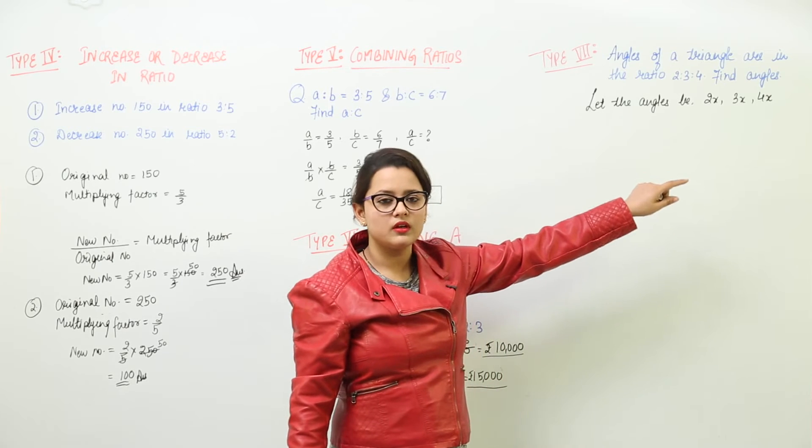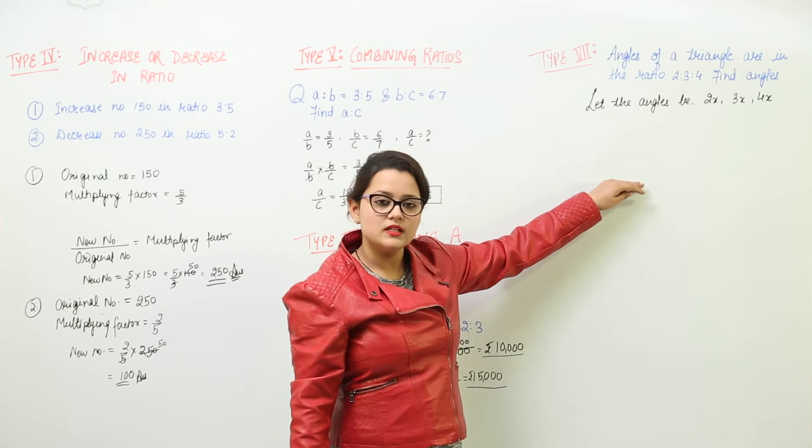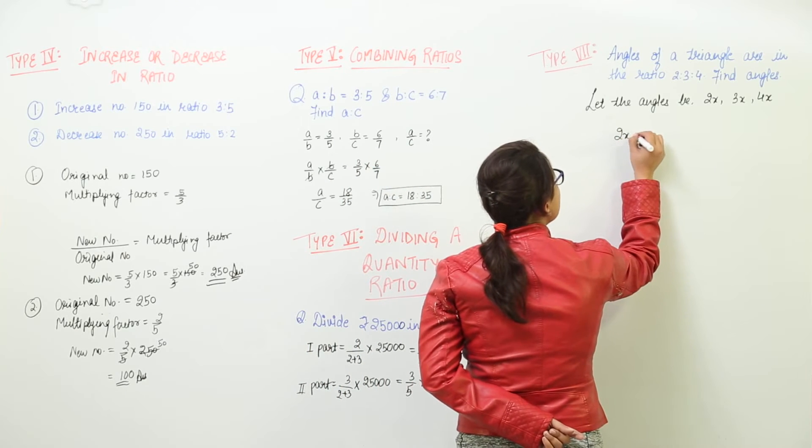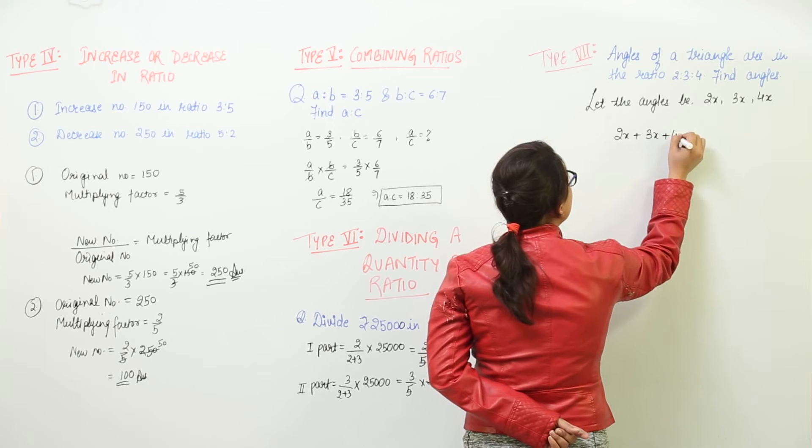Now that we have written these quantities, all we have to do is apply the angle sum property, because the sum of all three angles of a triangle is equal to 180 degrees.